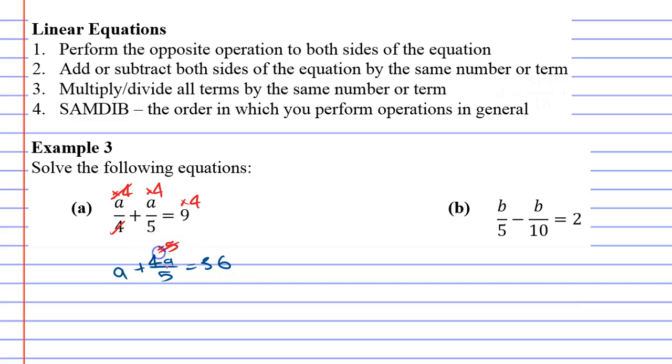Now what we're going to do is we're going to times everything by 5 because that'll cancel out this fraction. So what's that going to give us? That gives us 5a plus 4a equals 180, since 36 times 5 is 180.